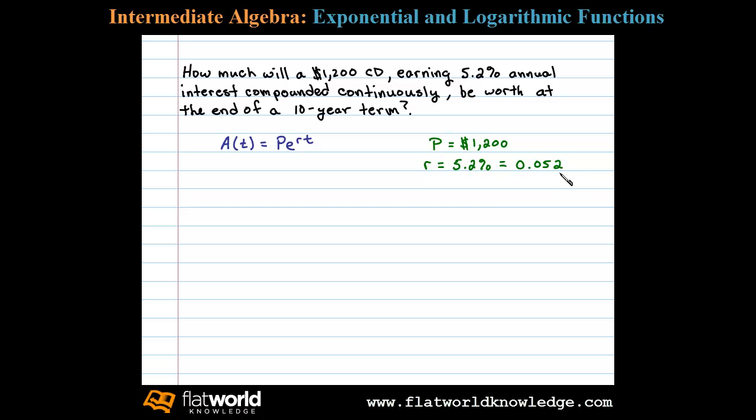T is the time here in years, so T was given to be 10 years. Once we find our values for P, R, and T, we can substitute those into the formula to determine the worth of the CD at the end of ten years.